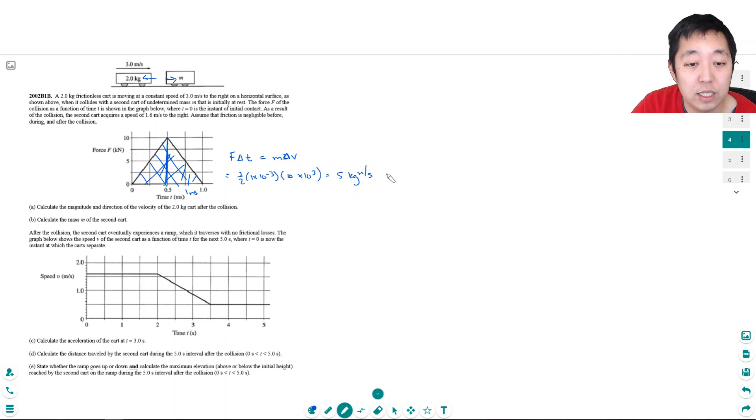That is equal to m delta v. If I divide by the mass, the two kilogram mass, I get delta v equals 2.5 meters per second. This caused a change in speed of 2.5 meters per second. The force is going to the left during the collision, so it's slowing it down by 2.5 meters per second. That means its final velocity is only 0.5 meters per second, because if I was at 3 and I subtract 2.5, I'm at 0.5.